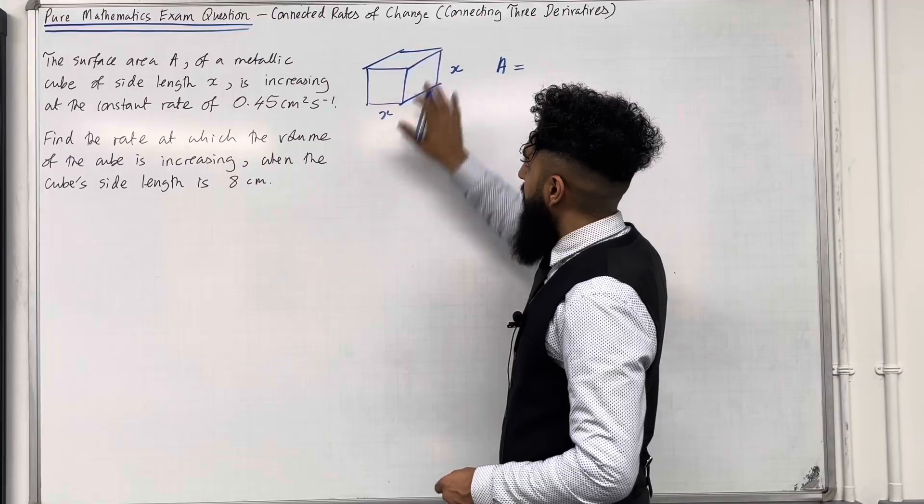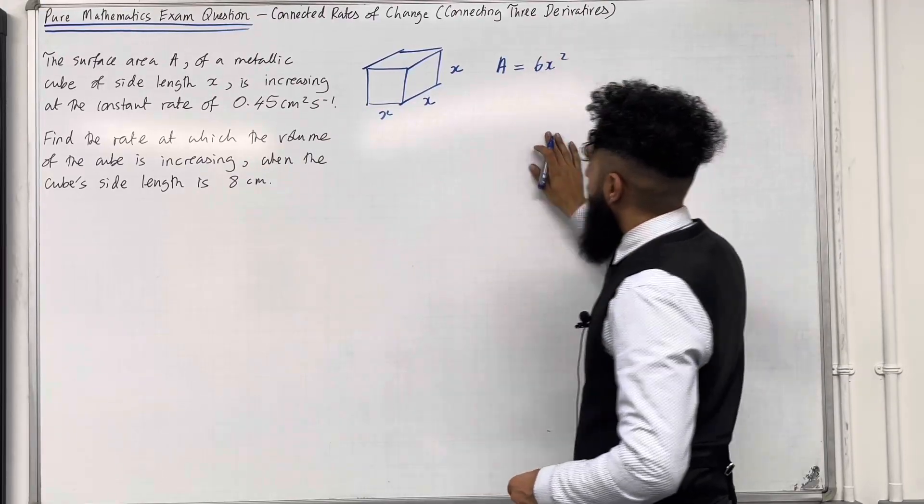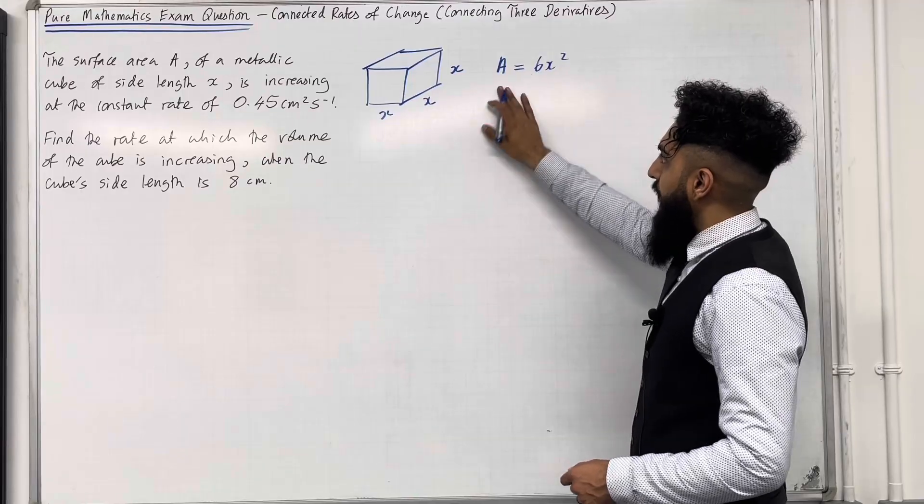We've got 1, 2, 3, 4, 5, 6 faces, so 6 lots of X squared, hence 6X squared. That's the formula for the surface area A.